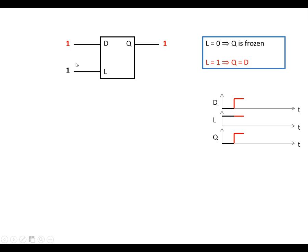And I'm going to make L go low. So this is now in a frozen state, so there's no change to Q. Even if D goes low, there's no change to Q — it stays high.